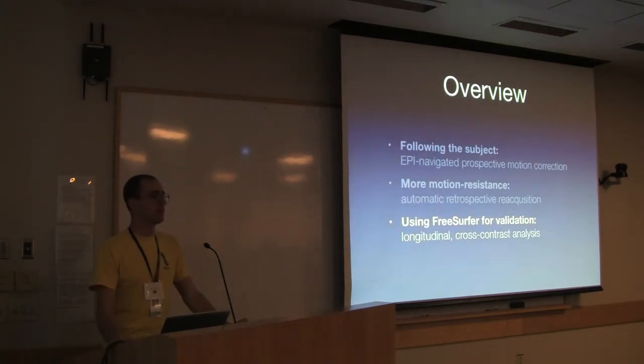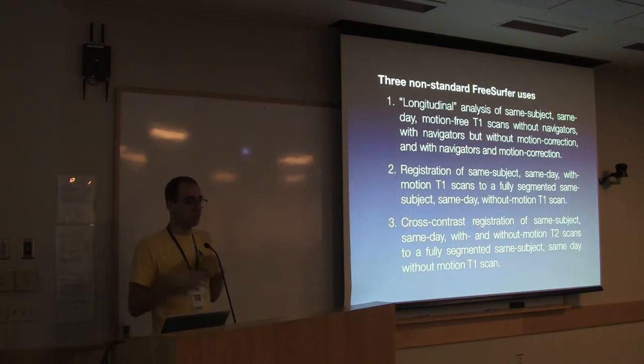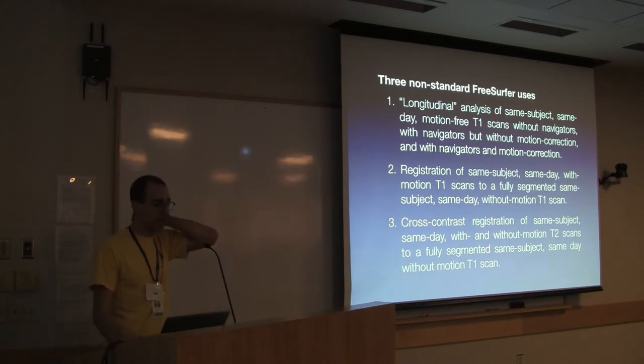That is the system that we've built. Now I want to talk a little bit about how we use FreeSurfer to evaluate it. There were three non-standard FreeSurfer uses here. The first is that we use the longitudinal analysis stream on same subject, same day, motion free scans, without navigators, with navigators, and with navigators but not doing motion correction. The reason we're using longitudinal analysis for this is because we're looking for artificial changes induced in the same subject here. We can order these as if they were time points and then use the unbiased parts of the longitudinal stream to perform a comparison between these time points. If we used a stream that was biased towards any one of those measurements, we might see artifactual changes that aren't really there. Similarly, we then used the cross contrast registration tools a bunch to validate whether our T2 motion correction system was working.